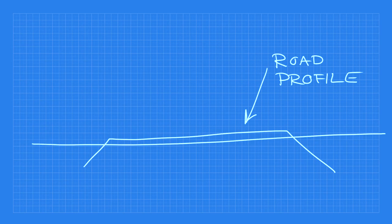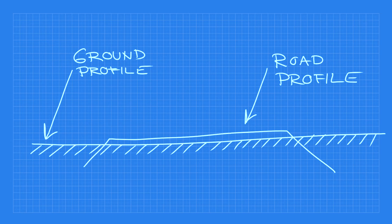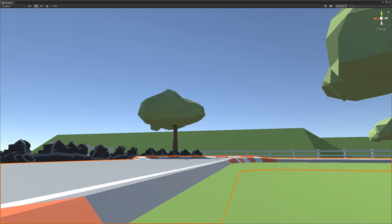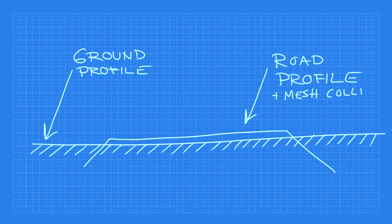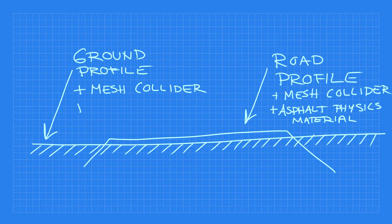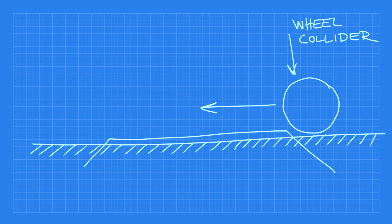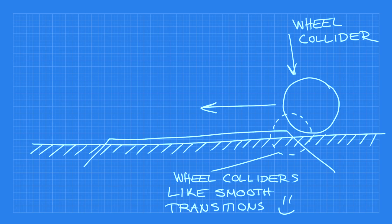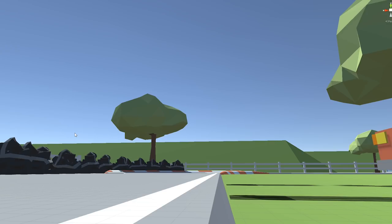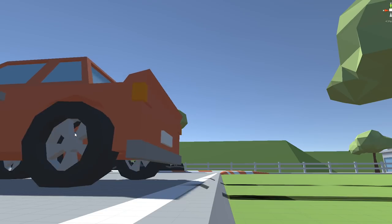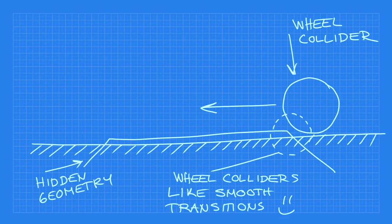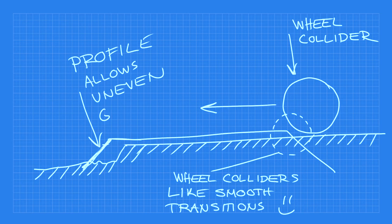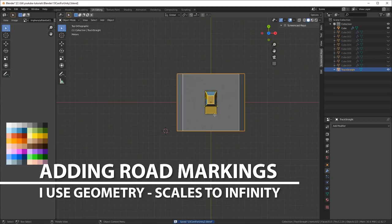The reason I do this is because if you have a road profile with slanted edges, you can have the ground profile and basically just sink that into the ground. I'll slide it up in Unity so you can see, then I add a mesh collider to both of them. The good thing about this is that you can keep asphalt physics on the road and grass physics on the terrain itself, so you have different characteristics. With a wheel collider it's going to work really well because they really like these smooth transitions. You can see in a slow-motion clip from the game how the wheel collider nicely goes up over that slanted edge — that's why I've got it cutting down through the ground. Another benefit is that the profile allows for uneven ground and you still don't see the underside of the road.